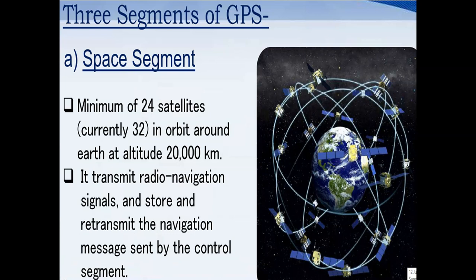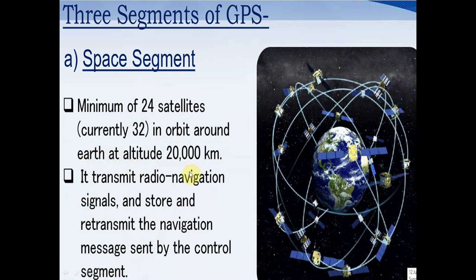As for the three segments: the space segment has a minimum of 24 satellites, currently 30 in orbit, around the Earth at around 20,000 km altitude. They transmit radio navigation signals. The space segment has around 32 satellites at altitude. These satellites are at one location and we are finding out the location of nearby objects and things.